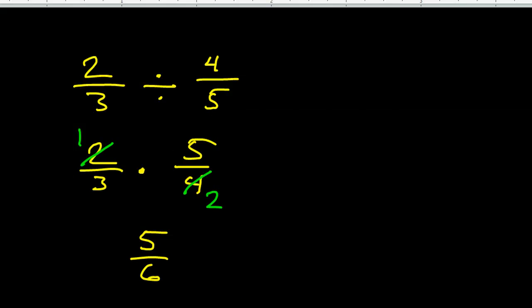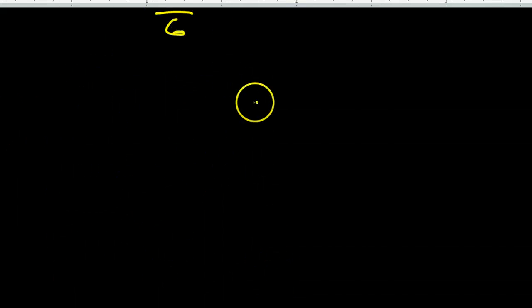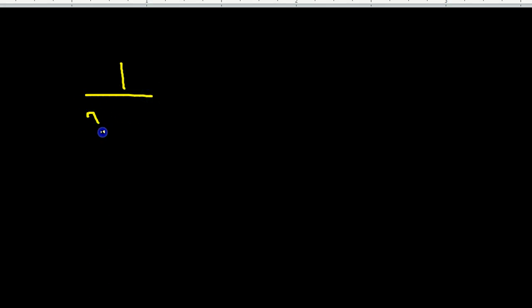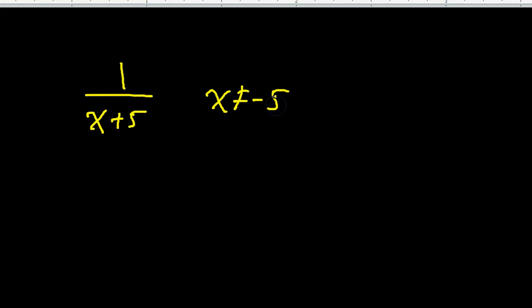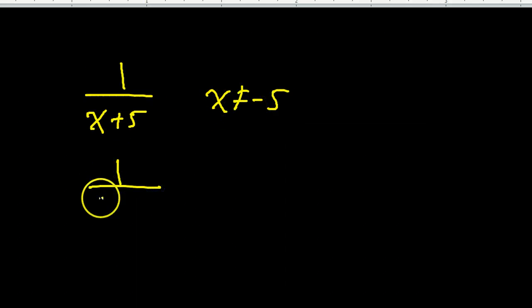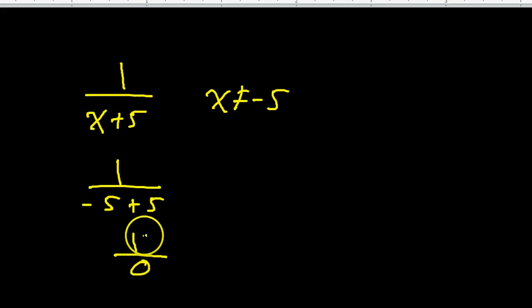Here's one other thing. When we talk about restrictions, for example, if I have one over x plus five, this is going to have a restriction that x cannot equal negative five. Because if x were allowed to be negative five, then I'd have negative five plus five, and that would make zero. You can't divide by zero.